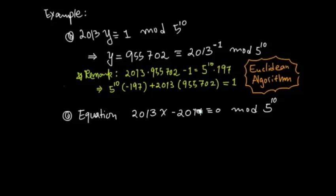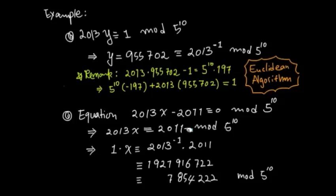We will use this idea to solve equations looking for integer solutions. For example, given a linear congruence equation, we can add 2011 to both sides and then multiply by the multiplicative inverse of 2013. That's how you solve this equation. Adding to both sides gives 2011 on the right-hand side. Multiplying by the multiplicative inverse isolates the left-hand side. The inverse of 2013 was that 955,000-something number, so multiplying gives us x on the left.